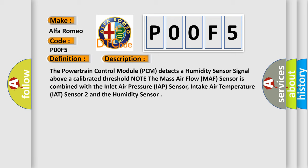The powertrain control module PCM detects a humidity sensor signal above a calibrated threshold. Note the mass air flow MAF sensor is combined with the inlet air pressure IAP sensor, intake air temperature IAT sensor 2, and the humidity sensor.